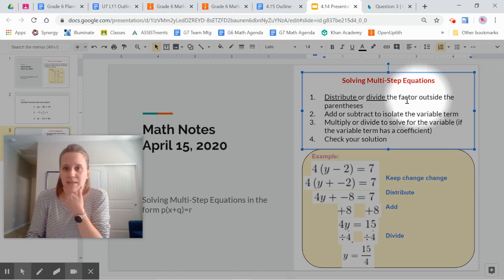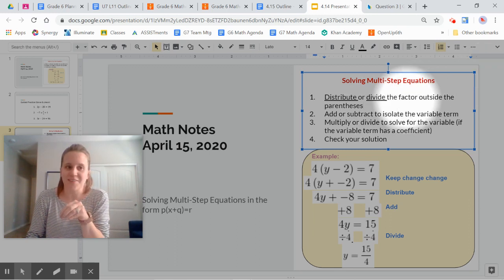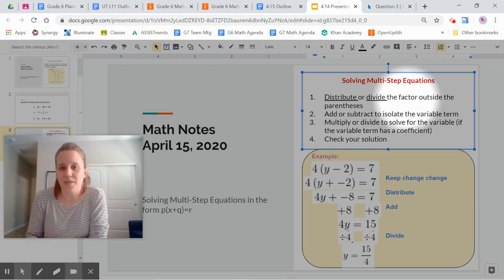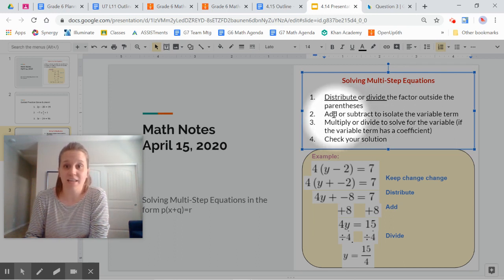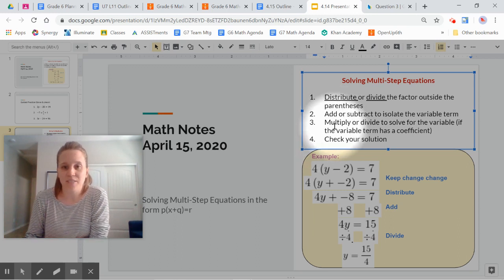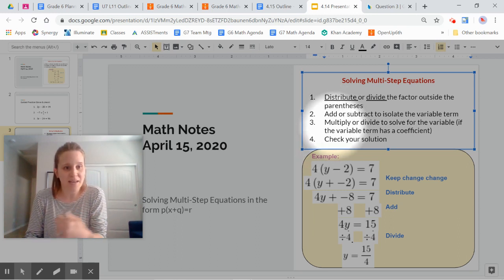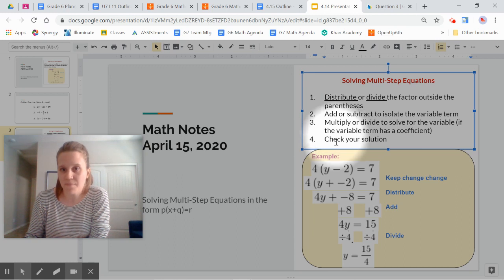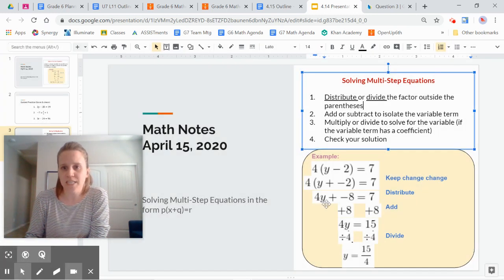That factor outside of the parentheses was the P in your notes in that part of the equation. My second step then and my third step are exactly the same as the ones yesterday. You just have to do this extra step first. So then either I'm going to add or subtract depending on what's the inverse operation. And my third step, I'm either going to multiply or divide depending on what is my inverse operation. And lastly, I'm going to check my solution.